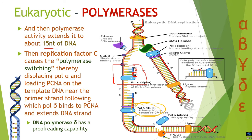Polymerase switching happens in both the leading and lagging strands. You will see in the lagging strand that pol alpha is getting replaced by pol delta. Pol delta has high processivity because of its attachment with the Proliferating Cell Nuclear Antigen — PCNA — which functions similarly to the beta clamp in E. coli, increasing its processivity. Hence pol delta is the main polymerase replicating the lagging strand. In the leading strand, pol alpha is replaced by pol epsilon, which replicates the leading strand.